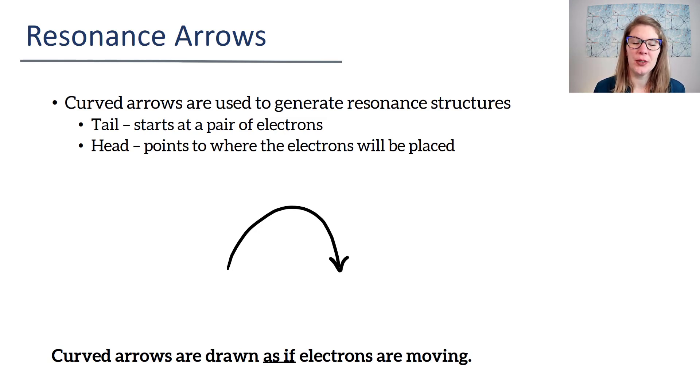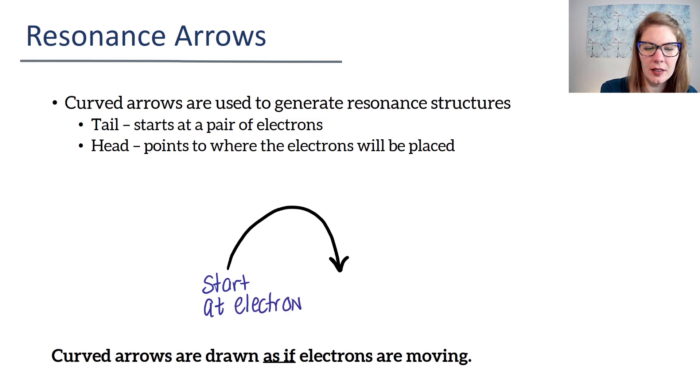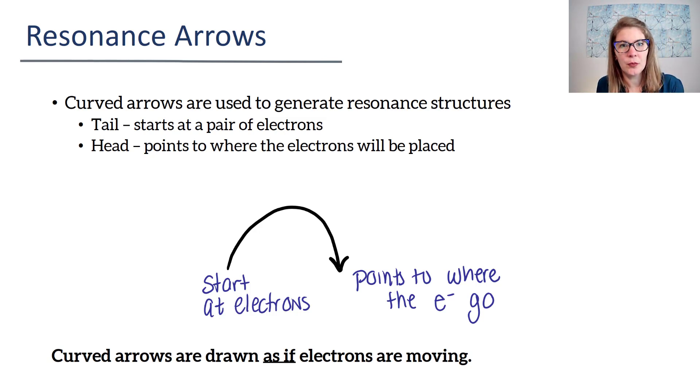When we look at these resonance arrows, they're going to be curved arrows. The tail is going to start at a pair of electrons. So this will start at electrons. And your arrow head is going to point where the electrons will go. So points to where the electrons go. I'm going to abbreviate electrons as E with a minus charge. The arrow starts at a pair of electrons and it says, this pair of electrons, you go here. And it points to where the electrons go.